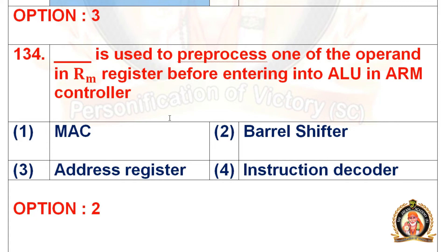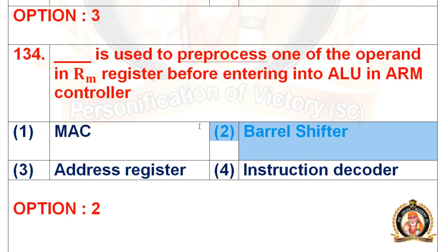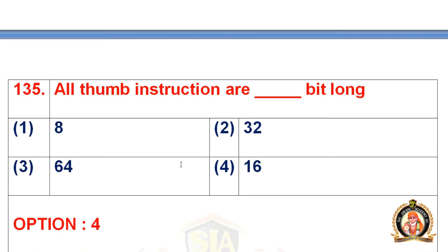Question 134: Dash is used to pre-process one of the operands in the RM register before entering into the ALU in ARM controller. Options are MAC, barrel shifter, address register, and instruction decoder. The right option is the second option, that is barrel shifter.